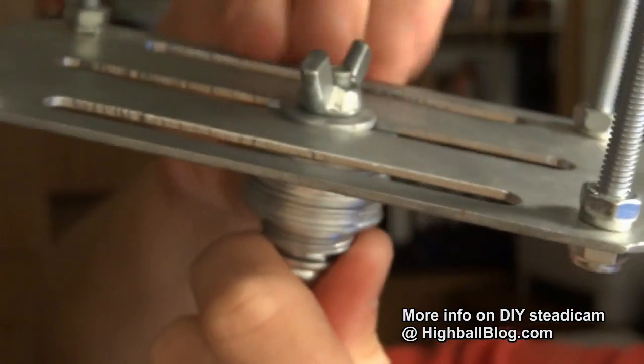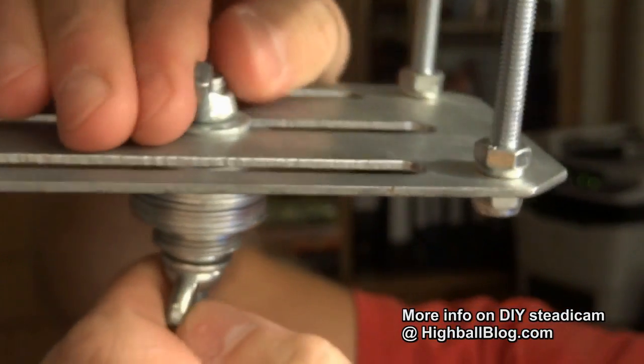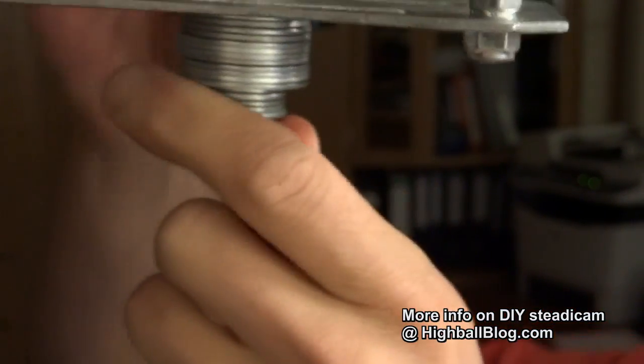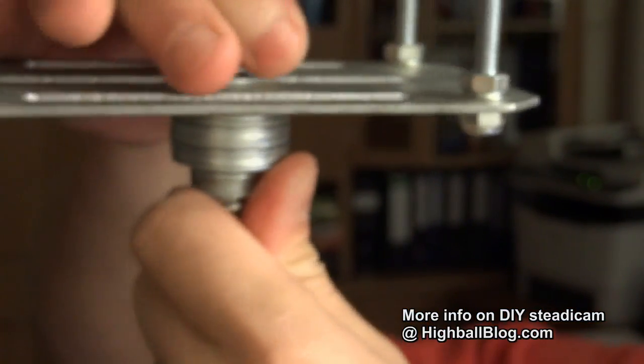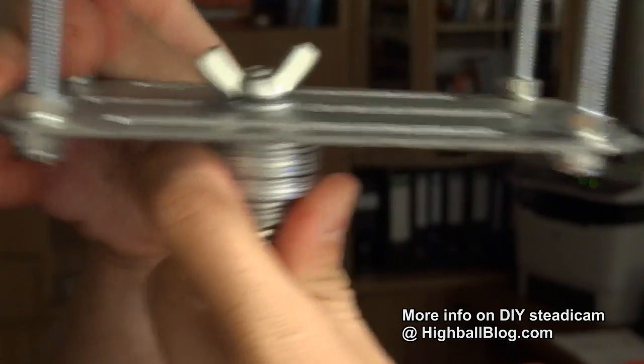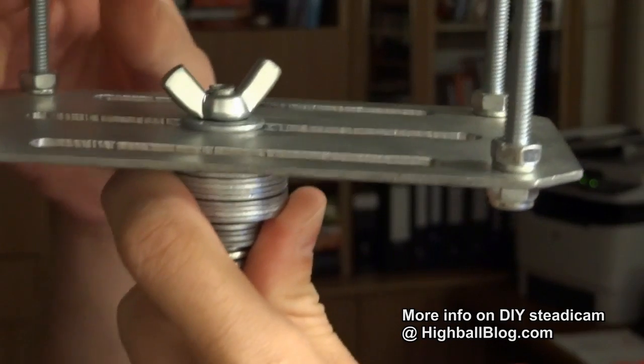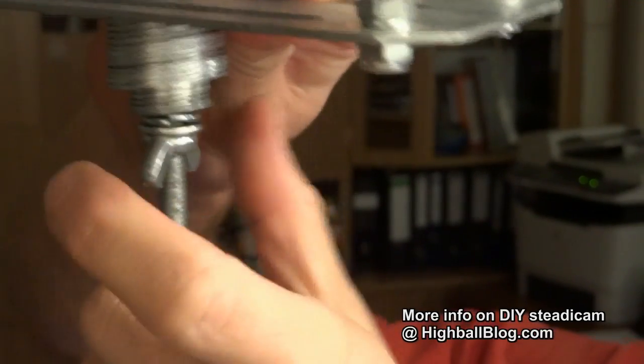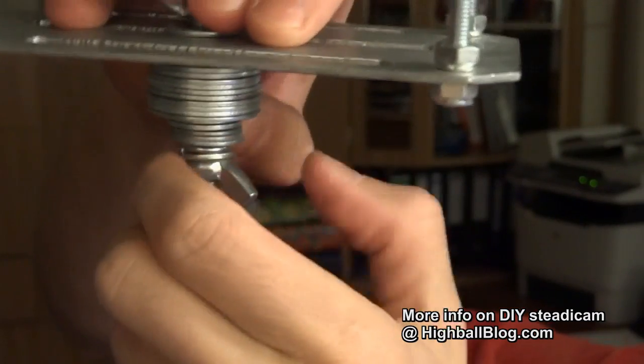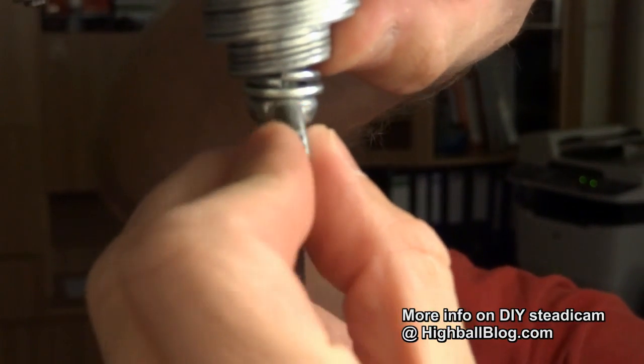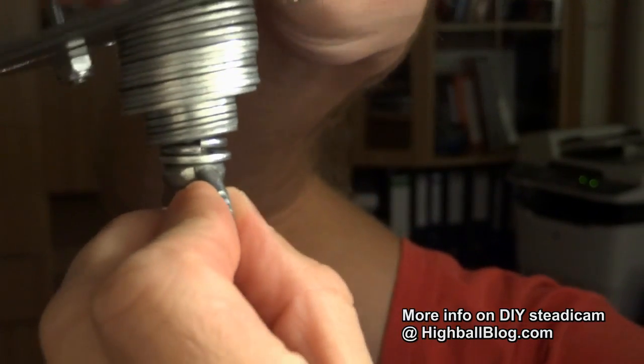Then we have this plate, the bottom plate. You just loosen these two wing nuts, and then you can just slide it like this. So you can adjust the balance of the steadicam. This is the bolt here. You need to have this spring washer. You see it there.